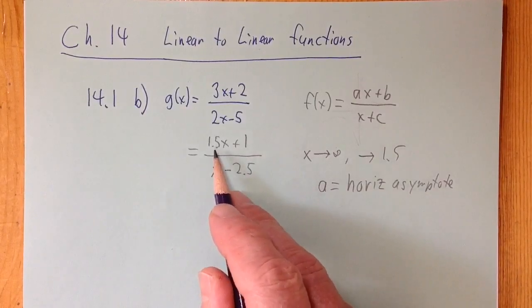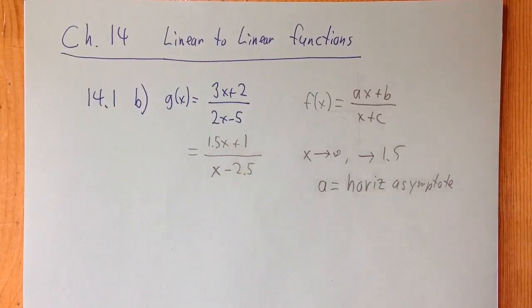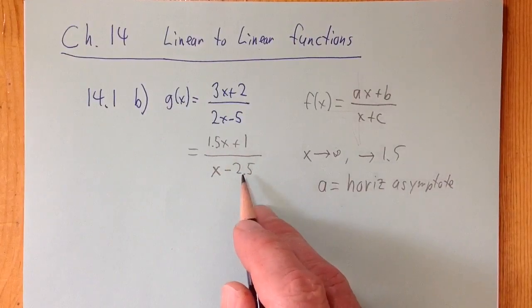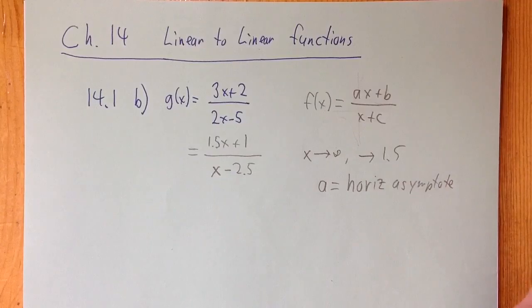So a, then, is what's called the horizontal asymptote, because as you go really far to the right, as x gets big, the function approaches a. It can never get there. It'll never get to 1.5. But the bigger x gets, the closer it gets to 1.5, because 1 and negative 2.5 just don't matter anymore. Okay?